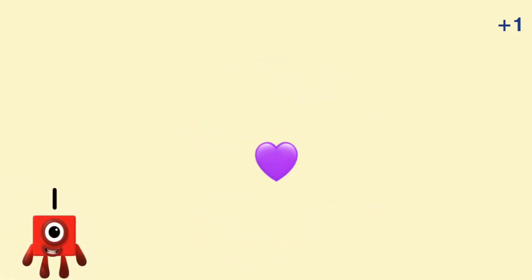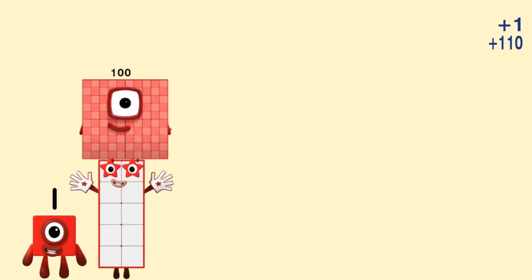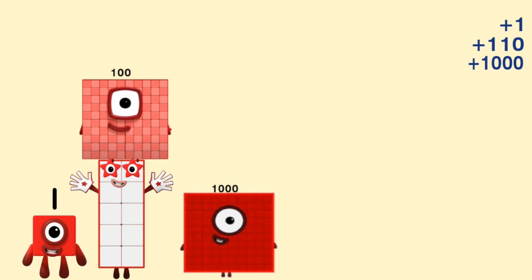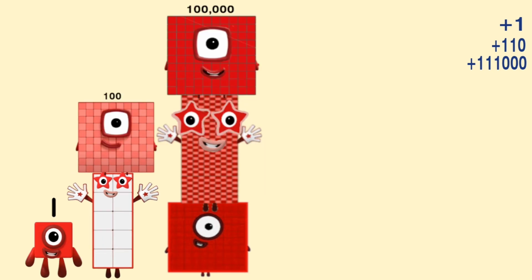One plus ten equals one hundred ten. Plus one thousand, plus ten thousand, plus one hundred thousand equals one hundred eleven thousand.